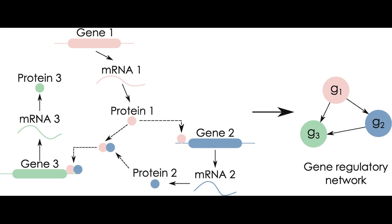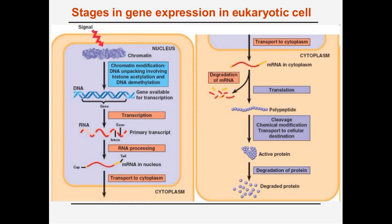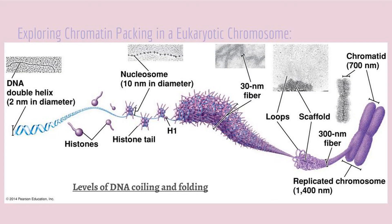Recall that gene expression in eukaryotes is a lot more sophisticated, with many more steps. This allows for gene expression to occur at stages besides transcription and translation. In fact, eukaryotes regulate their genes even before transcription due to the way they package their DNA. We just discussed how transcription involves lots of different proteins binding to DNA, so the extent to which DNA is accessible to these proteins influences when genes can be expressed.